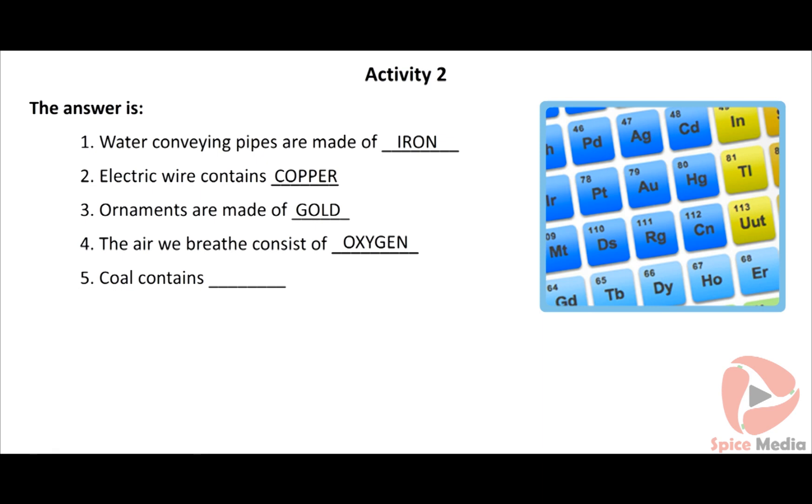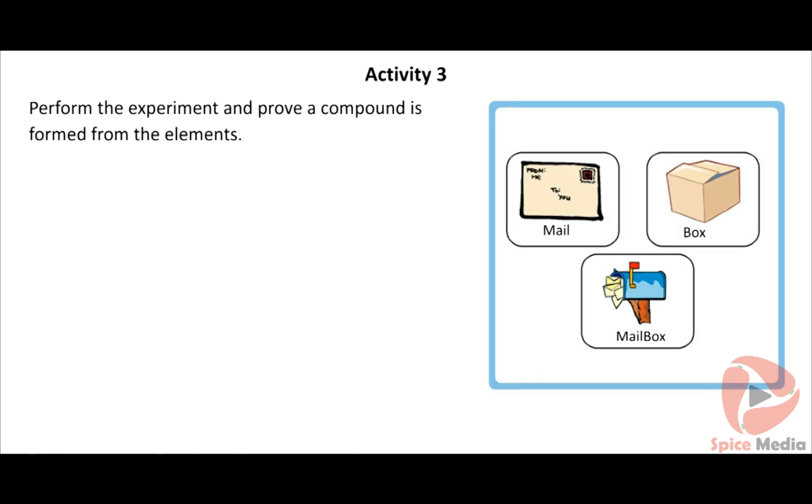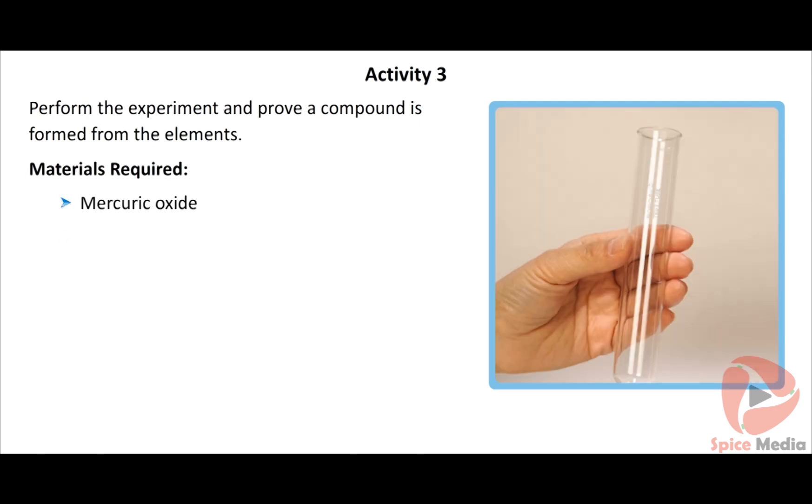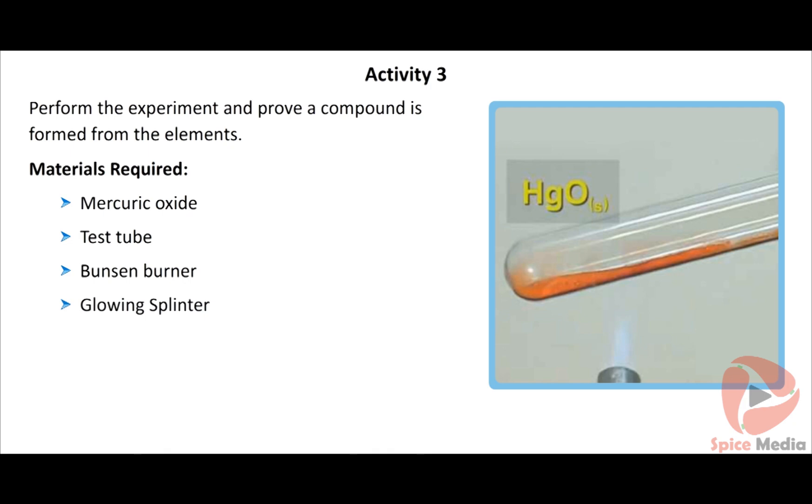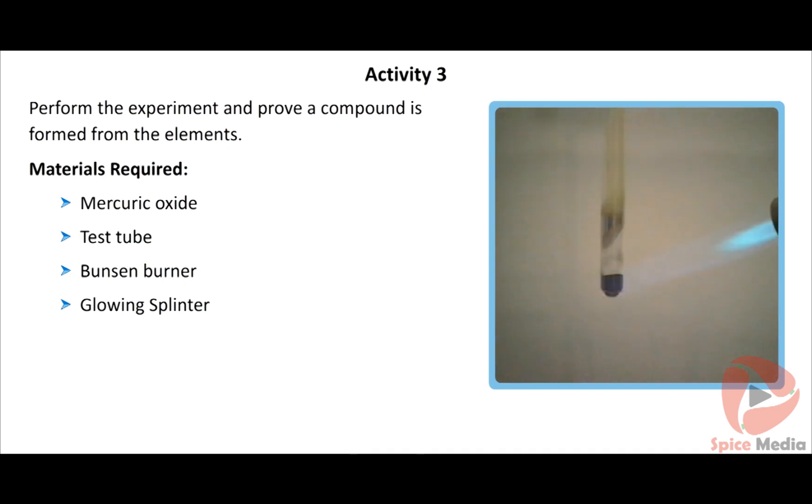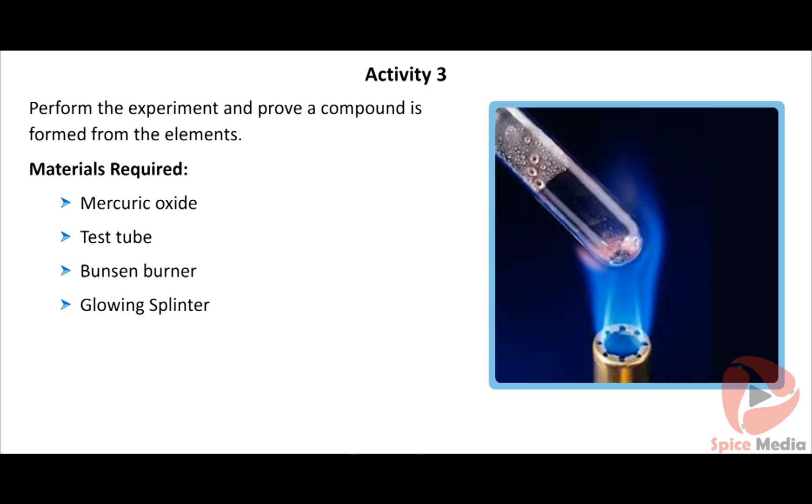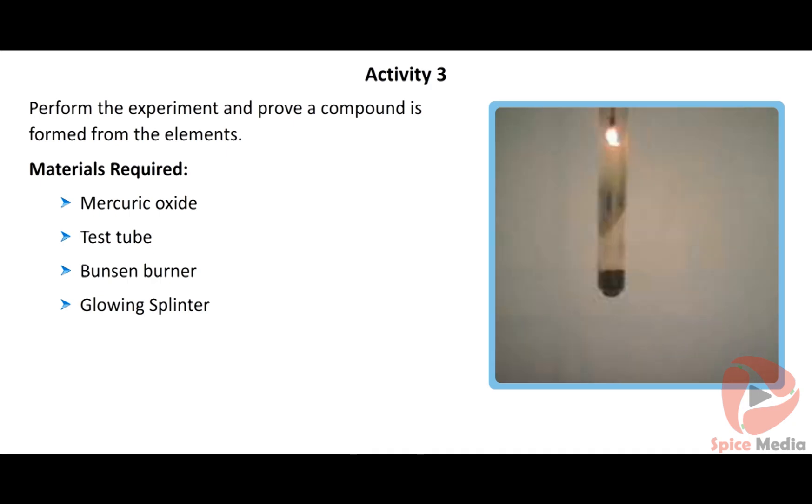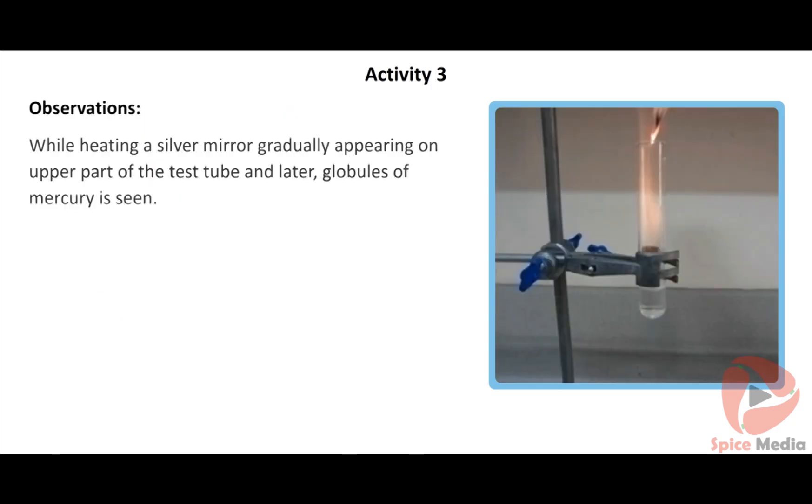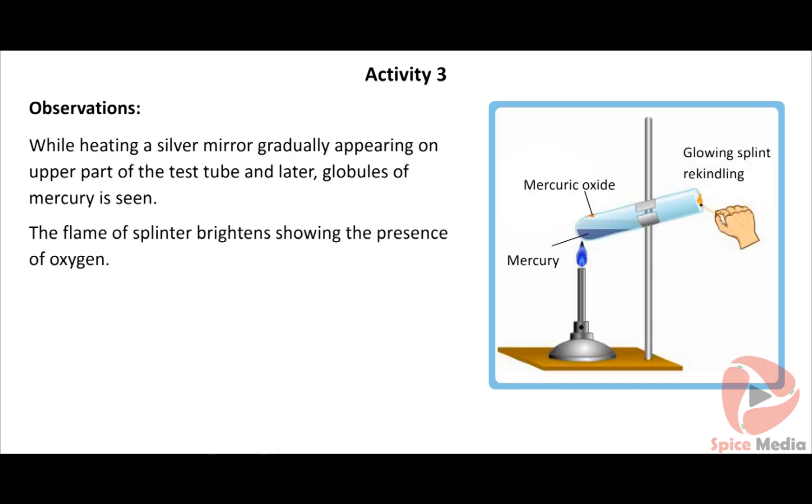Perform the experiment and record your observation. Materials required: Mercuric oxide, test tube, Bunsen burner, glowing splinter. Procedure: Take a little amount of mercuric oxide in a test tube. Heat it first gently and then strongly in a Bunsen flame. Observe the test tube. Insert a glowing splinter into the test tube. Record your observations. Observations: While heating a silver mirror gradually appears on upper part of the test tube and later globules of mercury are seen. The flame of splinter brightens showing the presence of oxygen.